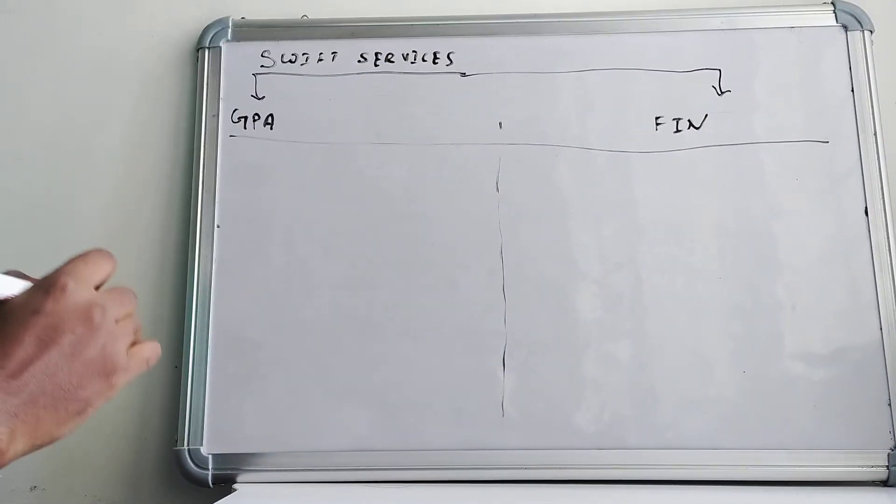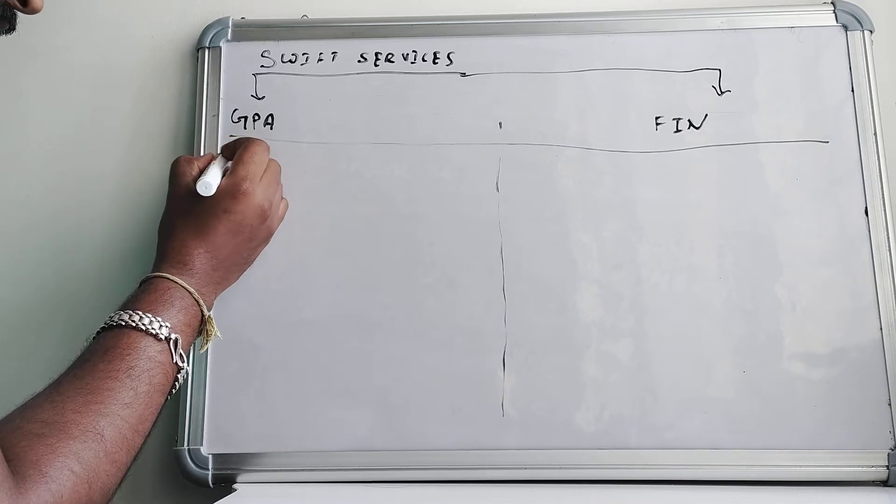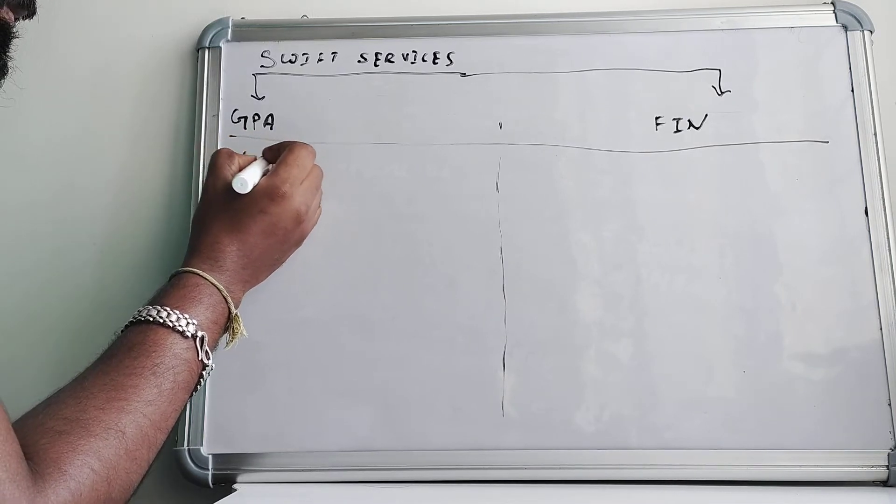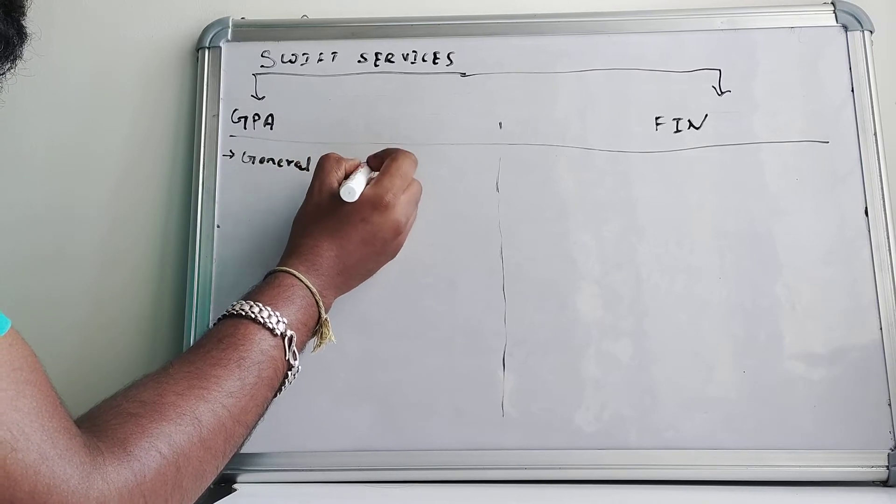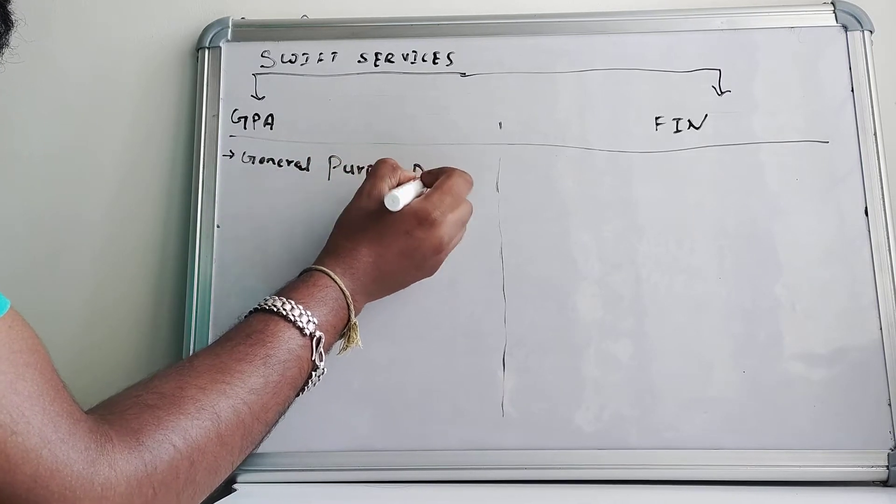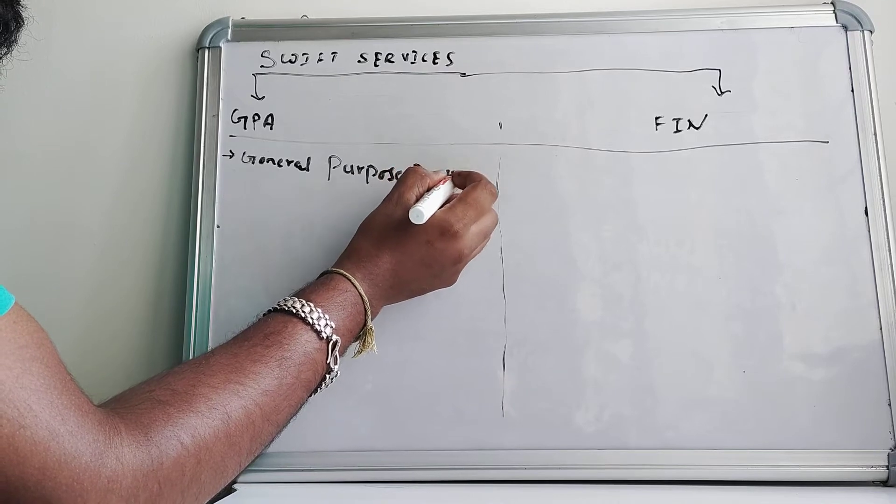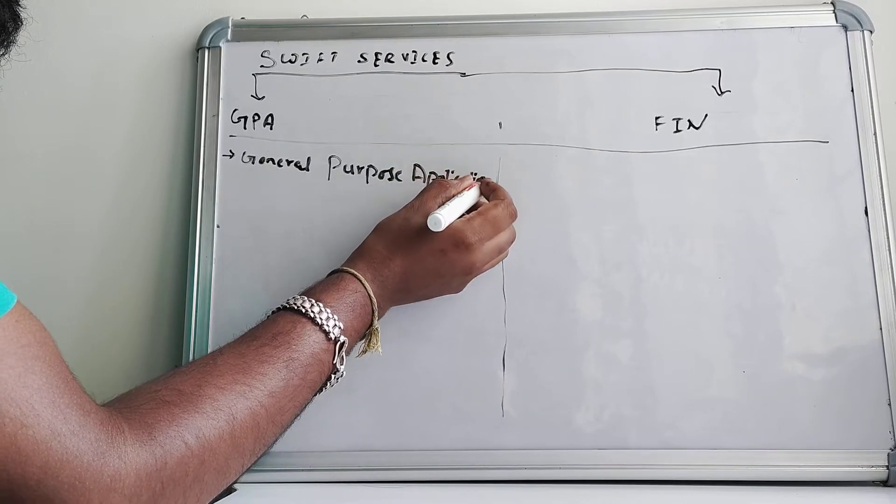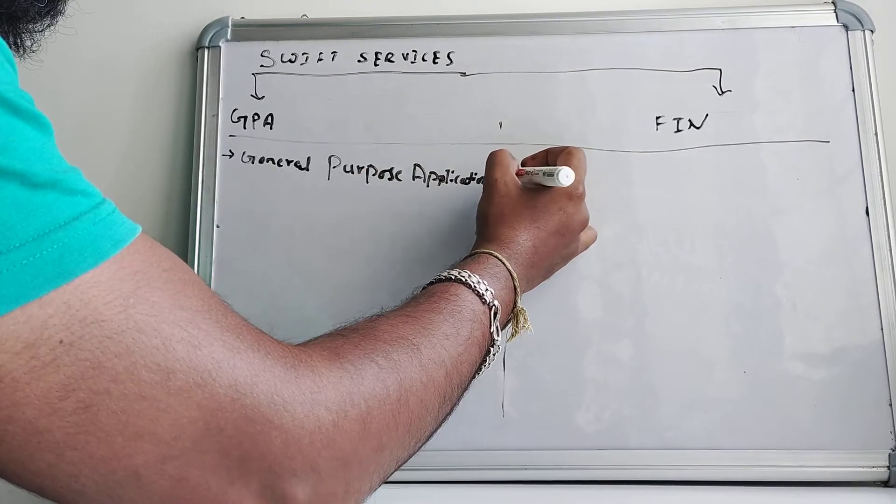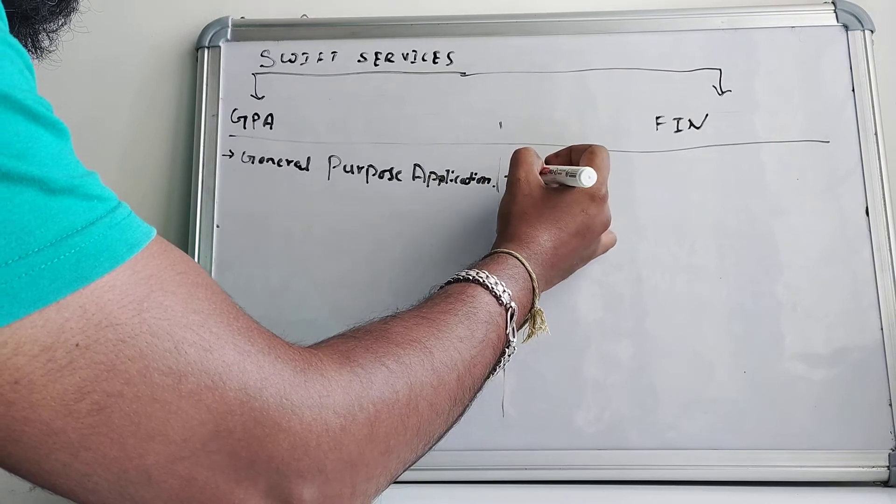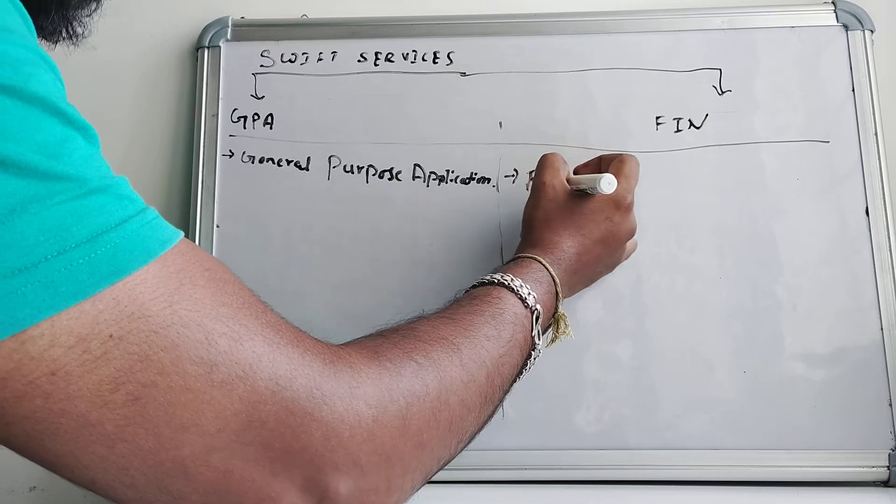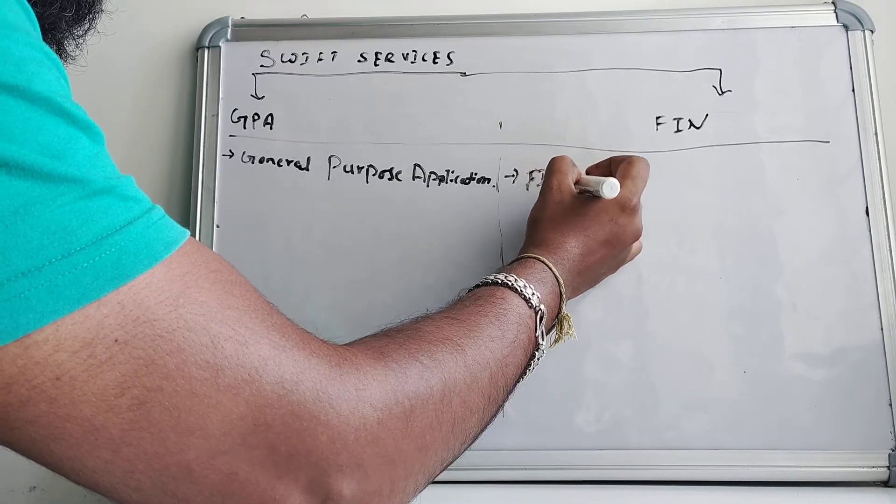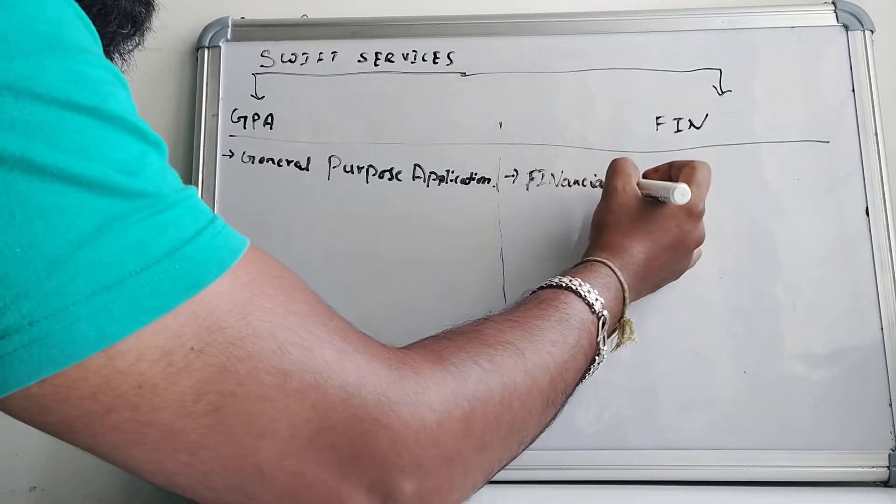Let's understand first about GPA. GPA stands for General Purpose Application, whereas Fin stands for Financial Application.